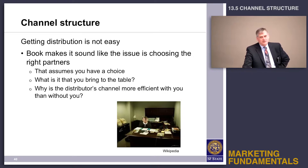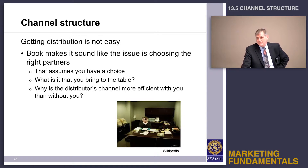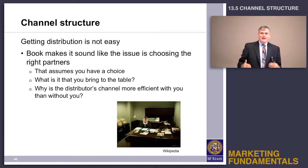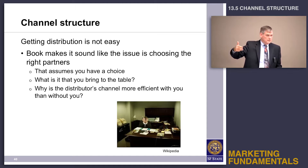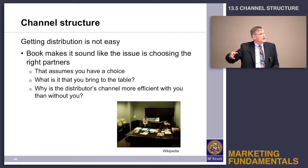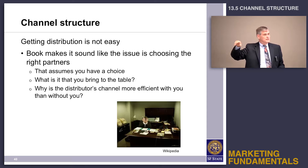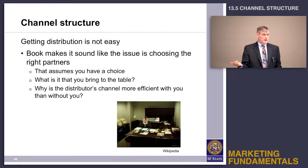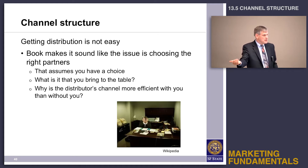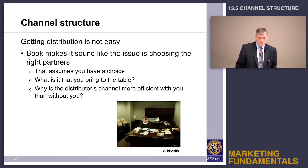Most books talk about channel structure as if getting channel partners was easy — just choose partners that fit your strategy. But sometimes it's hard just to get a retail partner. Retailing is a highly concentrated market with a small number of retailers that dominate. If I want to get retail distribution, I have to ask: what's in it for Walmart? It's not just about what's best for me; I have to understand that channel partners need to make money too, and I need to demonstrate that everybody wins by carrying my product.